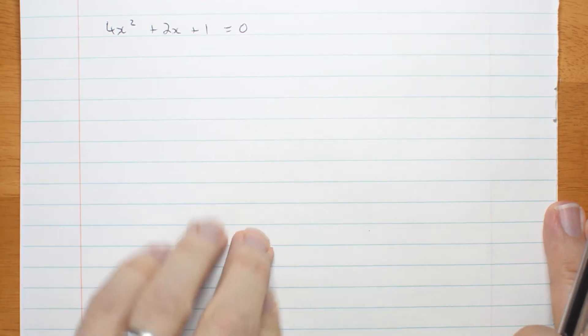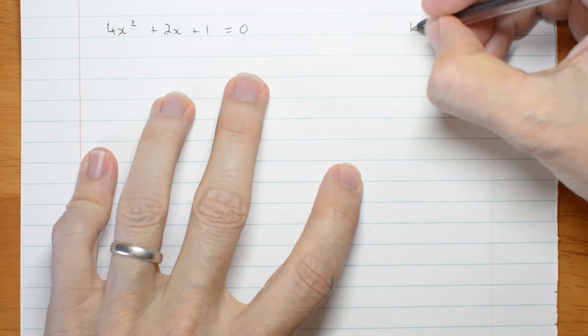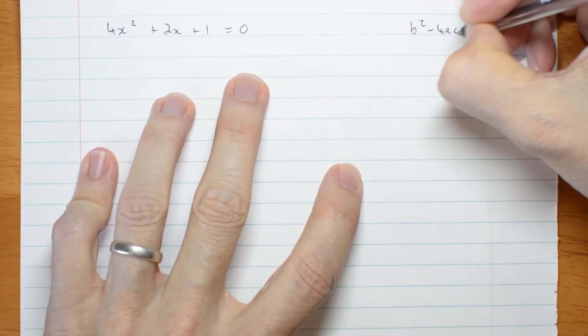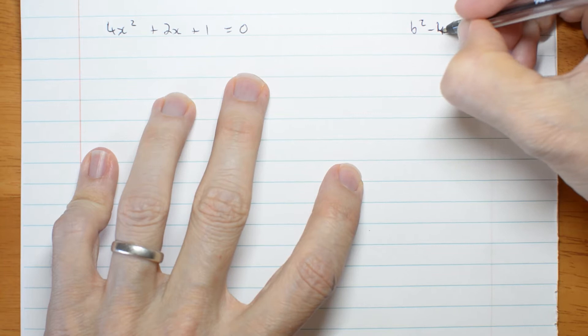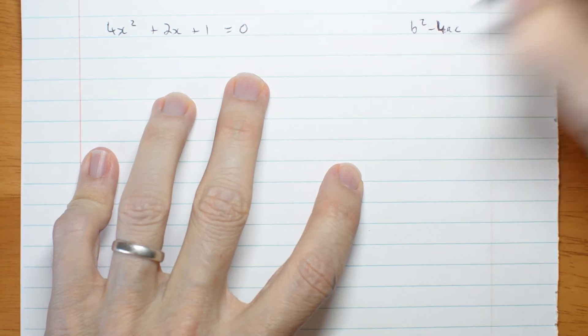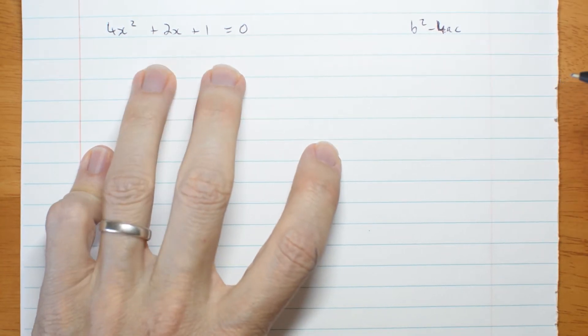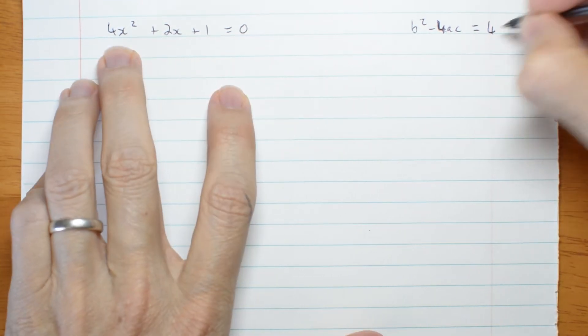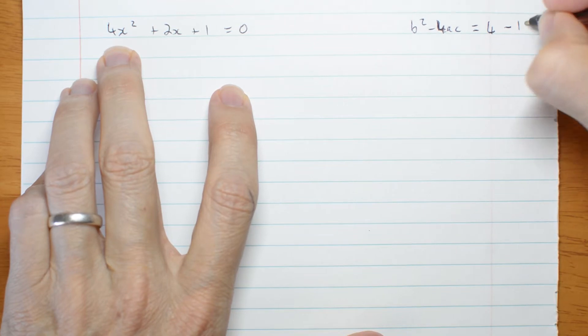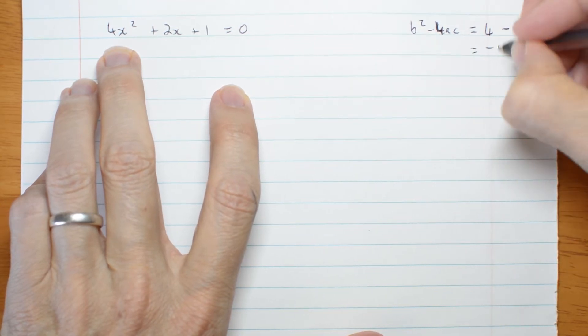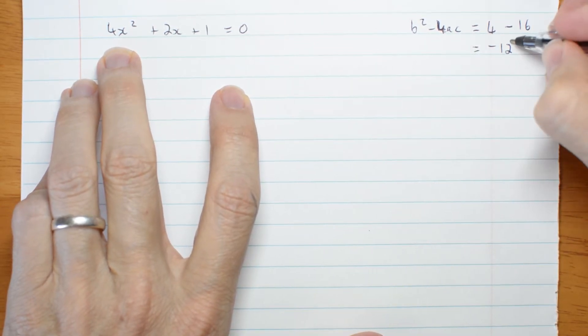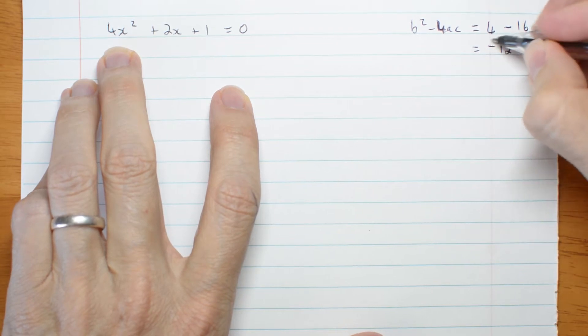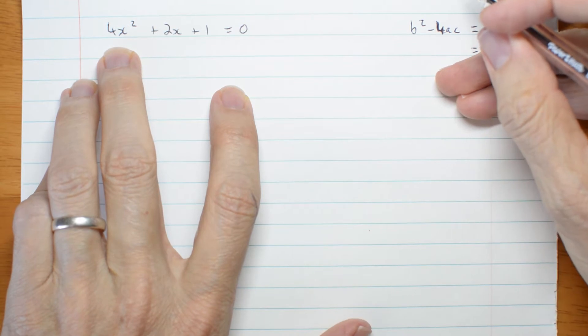So let's try it. First we're going to work out the discriminant, b squared minus 4ac. It's going to save us some effort if we know the discriminant is a positive perfect square or zero. So b squared is 4 minus 4 times 4 is 16. That's negative 12. It's going to involve thirds and it's going to involve i. So we may as well just go straight to completing the square.